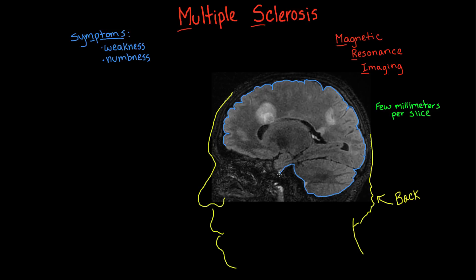Those symptoms — like weakness and numbness — are these MS symptoms? These are very common symptoms of multiple sclerosis, though they could be caused by all sorts of other disorders too, like stroke or cancer. The pattern of symptoms, the time course, and any particular risk factors help point us toward what we think might be the problem.